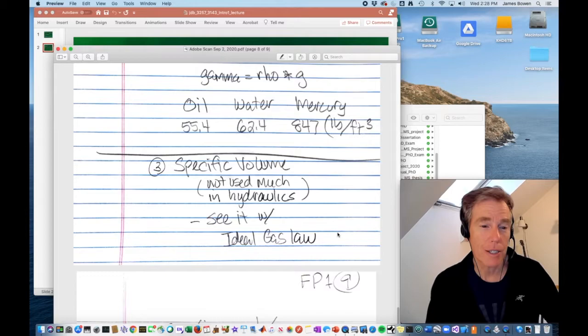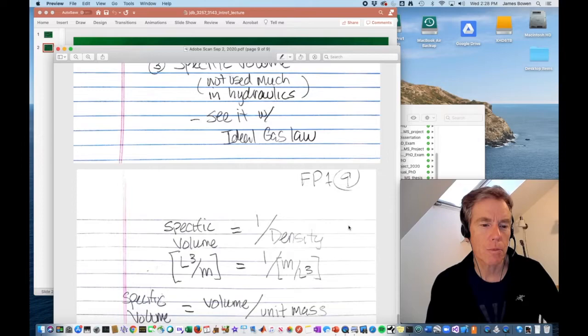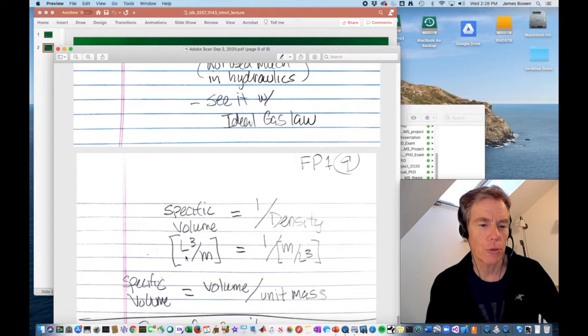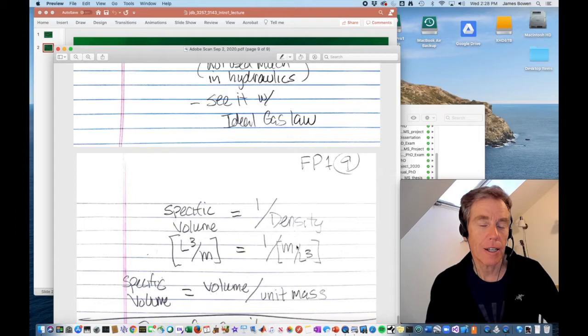The third measure we're going to look at is specific volume. This is not used much in hydraulics at all. But we will see it in the section on the ideal gas law that happens in the next lecture. You can think of specific volume as the reciprocal of density. That is, specific volume is the volume per unit mass. One over density, which is mass per unit volume. Just to repeat, specific volume is volume per unit mass.